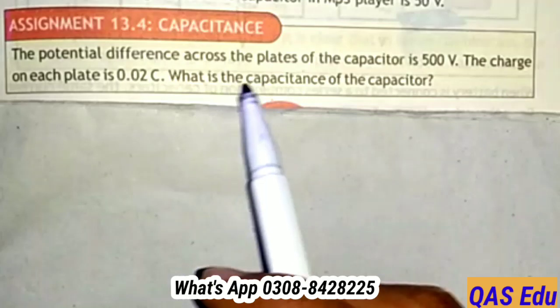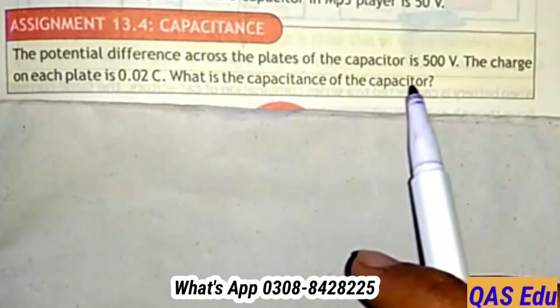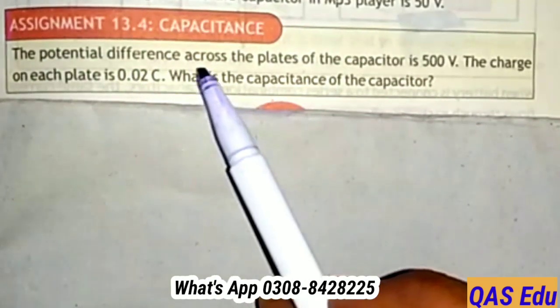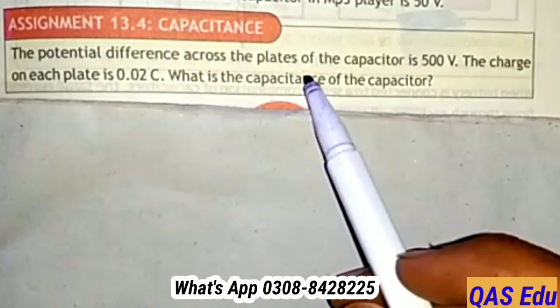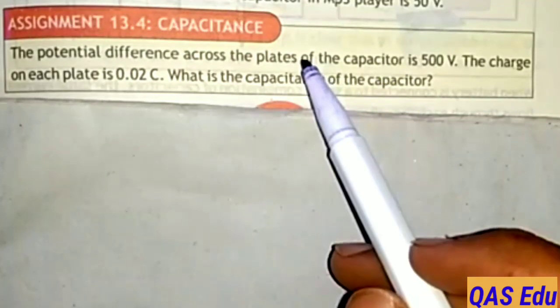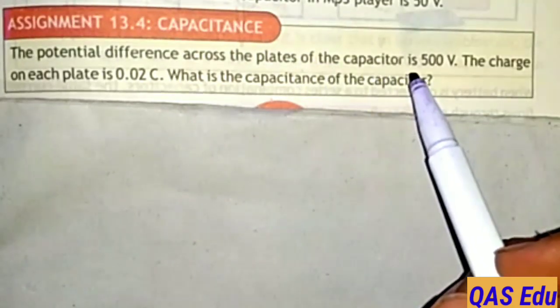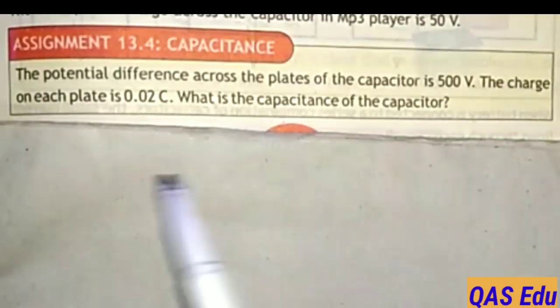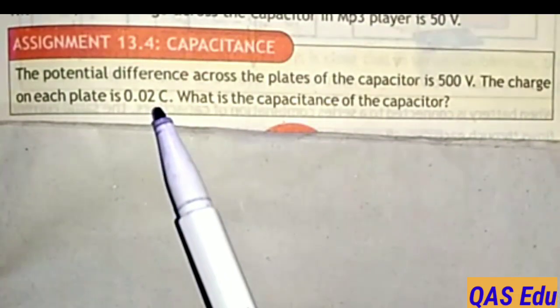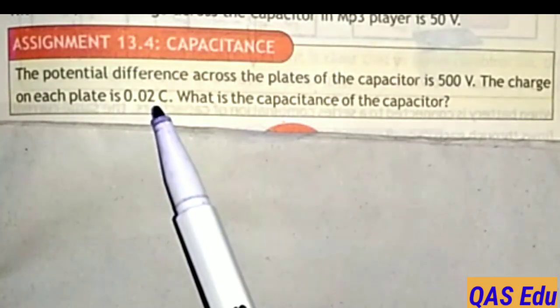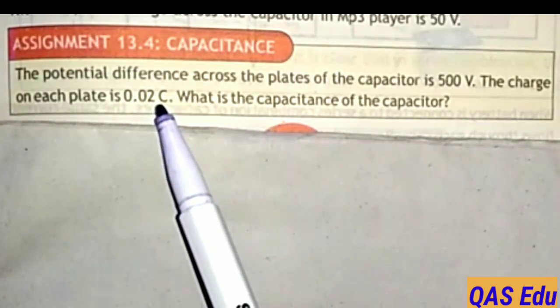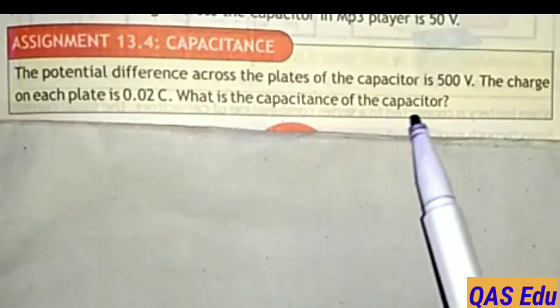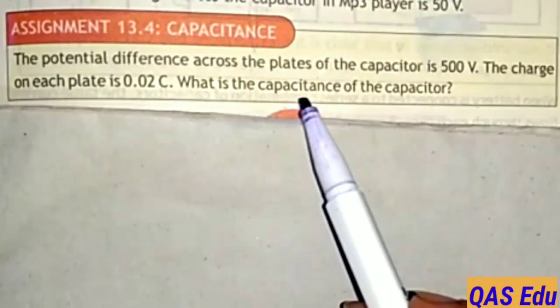The potential difference across the plates of the capacitor is 500 volt. The charge on each plate is 0.02 coulomb. What is the capacitance of the capacitor?